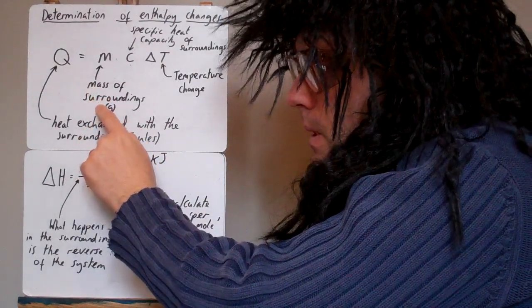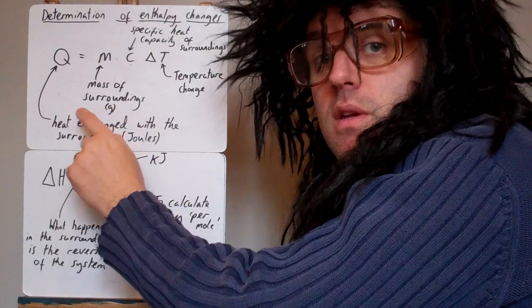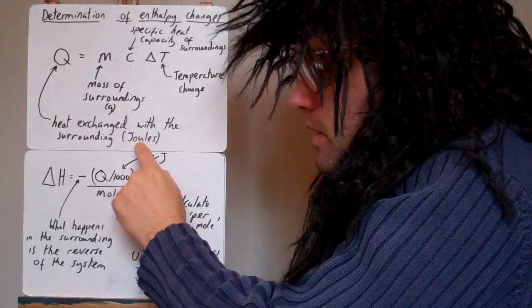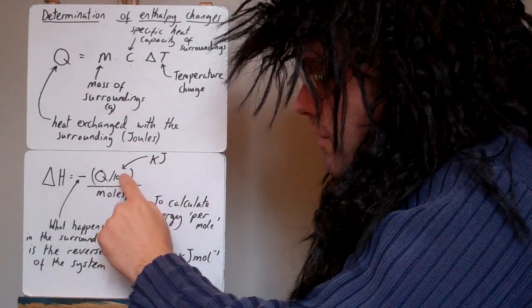Notice the mass of the surroundings in chemistry we use in grams. Sometimes in other subjects you might use kilograms, in chemistry it's grams, so that's why the answer comes out in joules. So to put it into kilojoules we divide it by 1000.